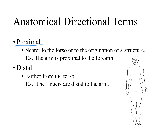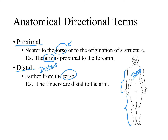Another pair of terms is proximal and distal. These terms are always used in relationship to the torso and are primarily used when looking at the upper and lower limbs. Proximal means close to the torso — for example, the arm is proximal to the forearm, because the arm is closer to the torso. Distal means distant from the torso — the fingers are distal to the arm because they are further away from the torso.